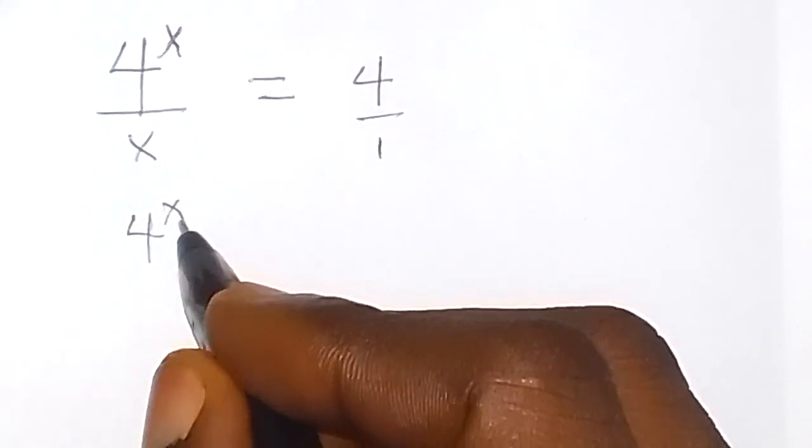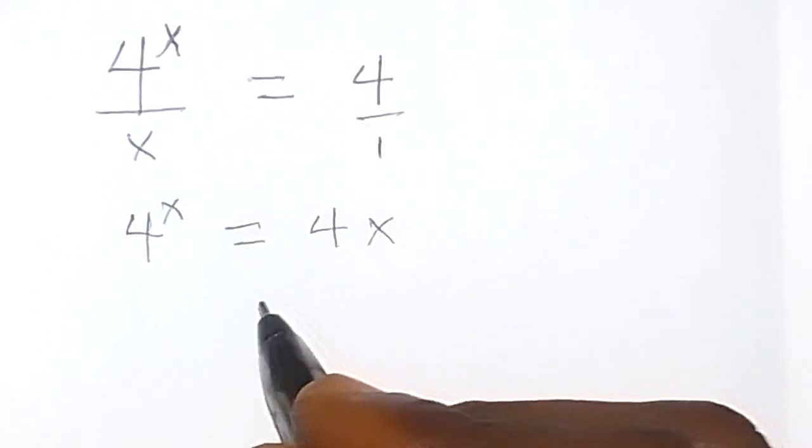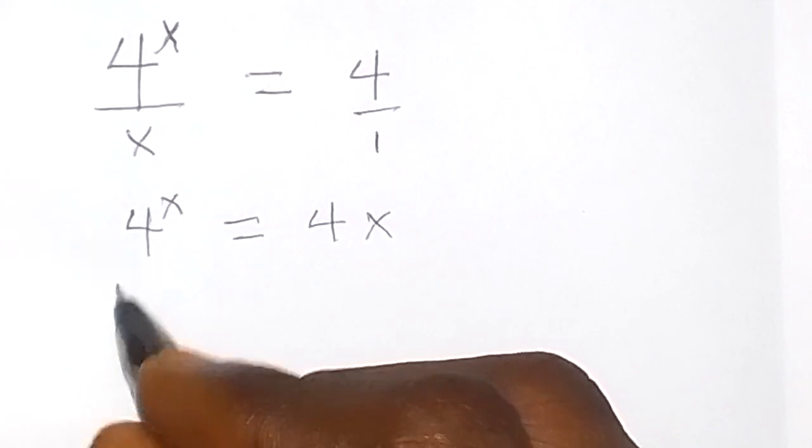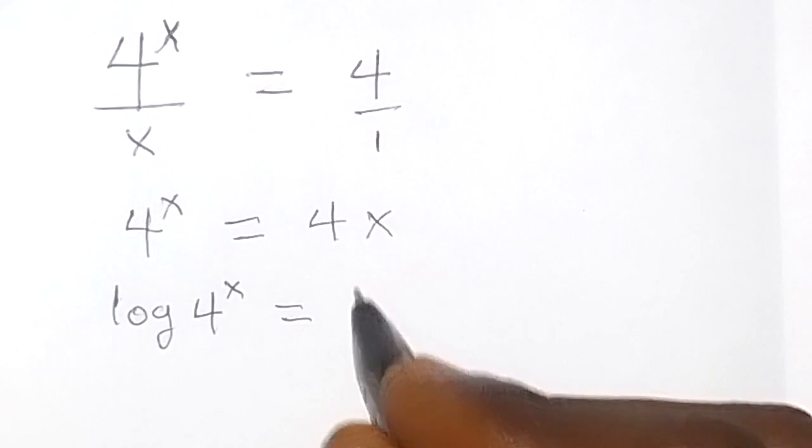Then equals to x times 4, that will be 4x. Then from here we can take the log on both sides. Here we now have log 4 raised to power x equals to log 4x.